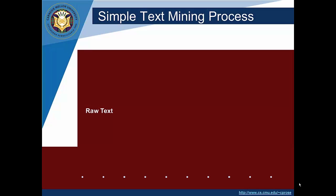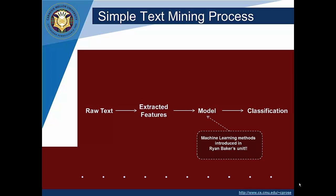So it all starts with the raw text. It's the fact that we have this raw textual data as our starting place that makes this area distinct. We extract features from that text with some awareness of the structure of language and what it is that we're trying to capture. From those features, we build a model. At this stage, building a model from a set of features is just like any other area of machine learning — it becomes just like whatever you learned in Ryan Baker's unit. Once you have represented the data in a tabular form with each instance being a vector of features, building the model at that point is kind of domain independent.